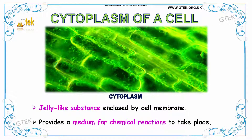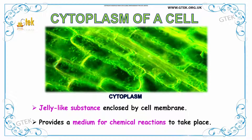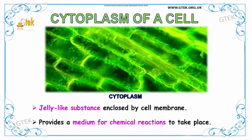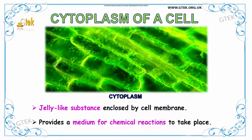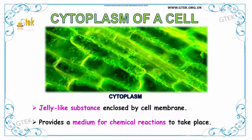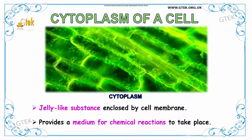Now we are going to see about the cytoplasm of a cell. Cytoplasm is a jelly-like substance enclosed by the cell membrane. It looks like a gel and it provides a medium for chemical reactions to take place.